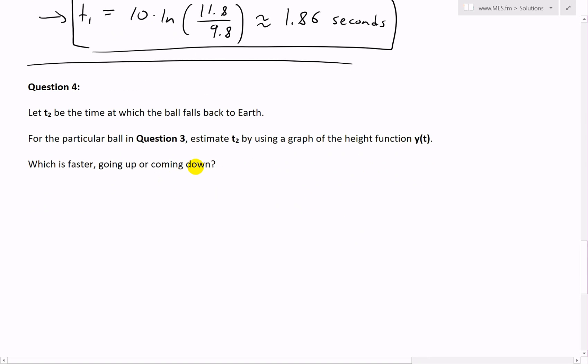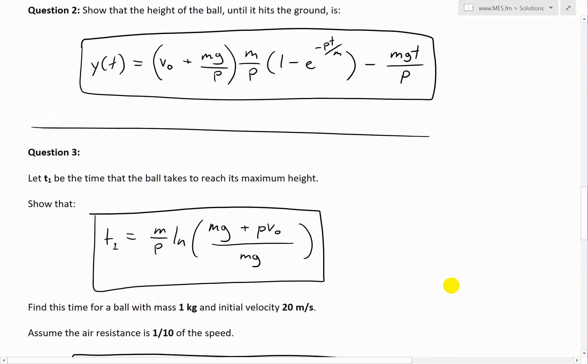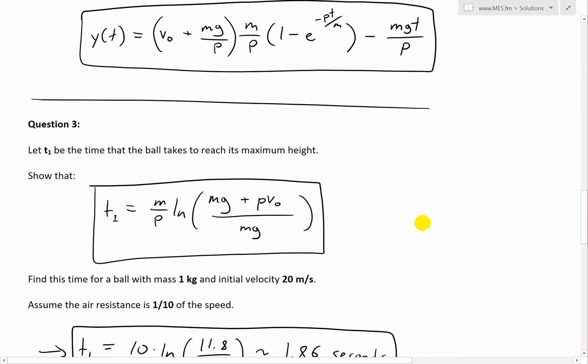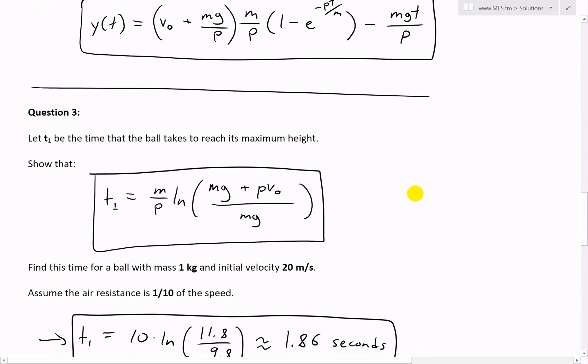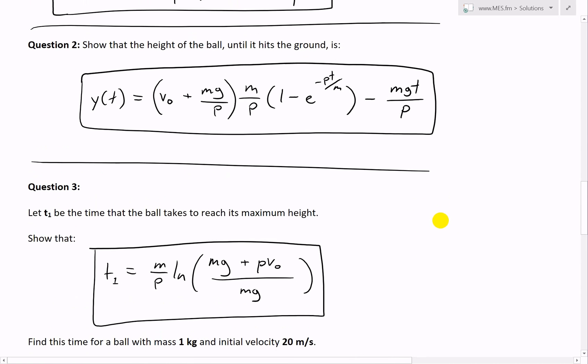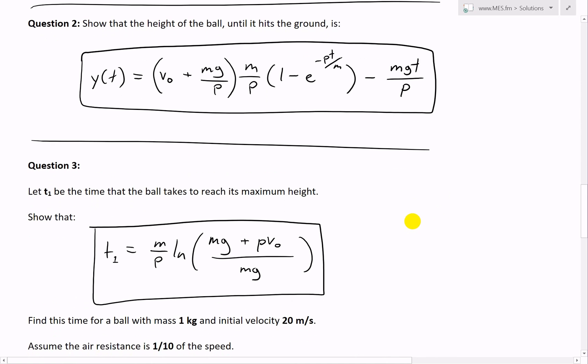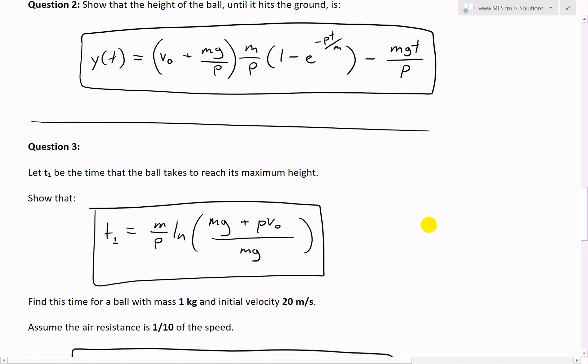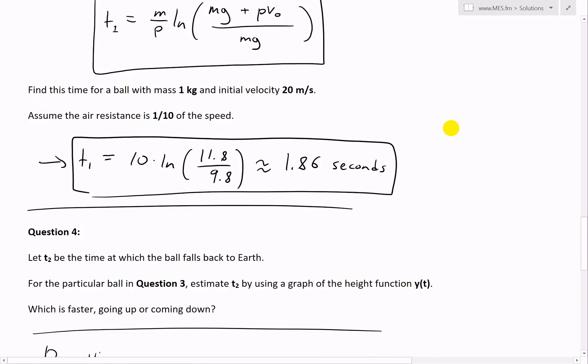To do this, we need to recall that function y(t) from question two. The function is y(t) = (v₀ + mg/p)(m/p)(1 - e^(-pt/m)) - mgt/p. It's a pretty complicated equation because there's a t in the power of this exponential function e, and also you're subtracted by t here.